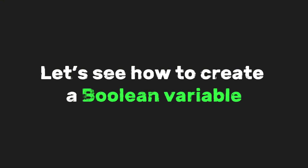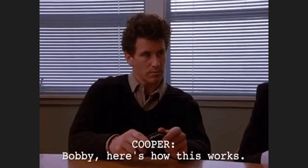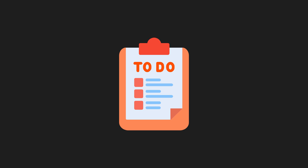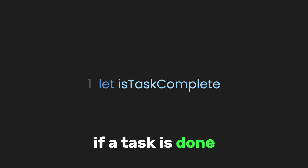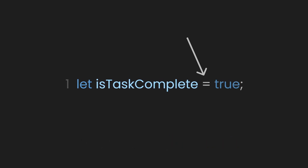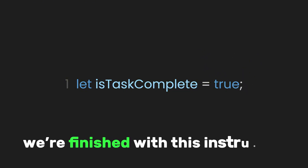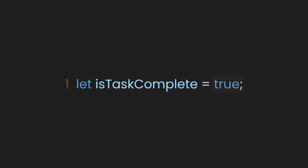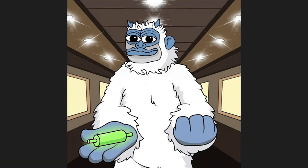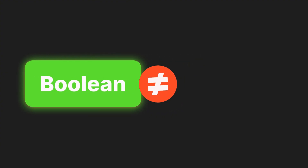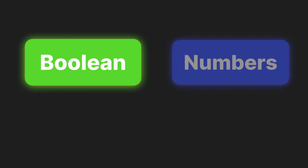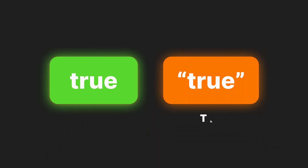Let's see how to create a Boolean variable, just like we did with strings and numbers. Let's say you want to store whether someone has completed a task. We'll declare a variable using the `let` keyword, name our variable `isTaskComplete`, then use the equal sign to assign the value `true`, and end the line with a semicolon. Here the variable's value is a Boolean, which can only be true or false. Booleans are different from strings like John, which need quotes, or numbers like 16 — they don't require any extra symbols.